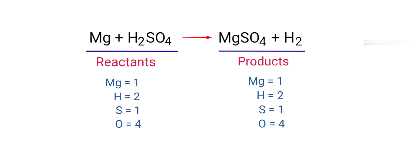There is one magnesium atom, two hydrogen atoms, one sulfur atom, and four oxygen atoms on both sides, so we don't need to balance this equation because it is already balanced.